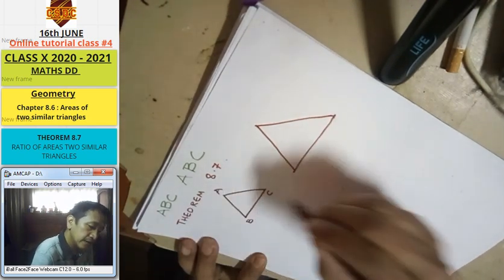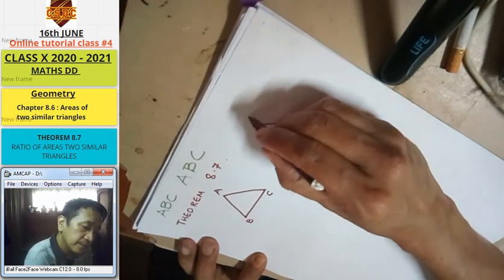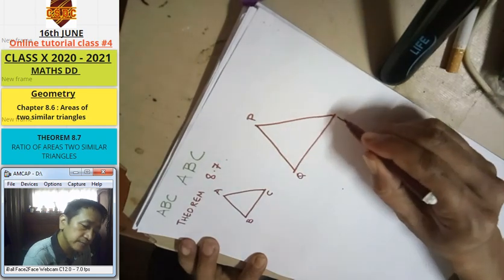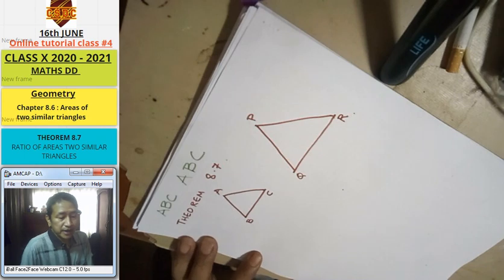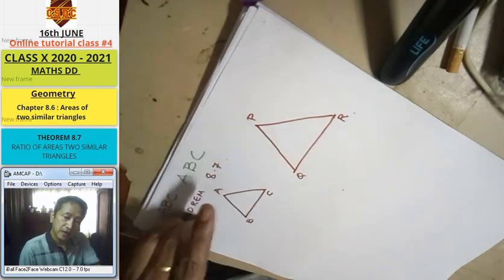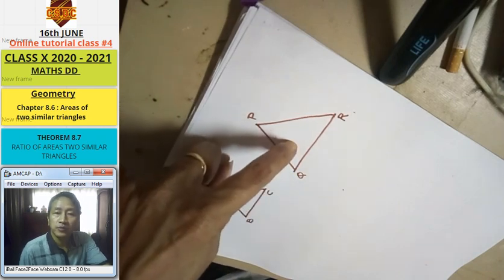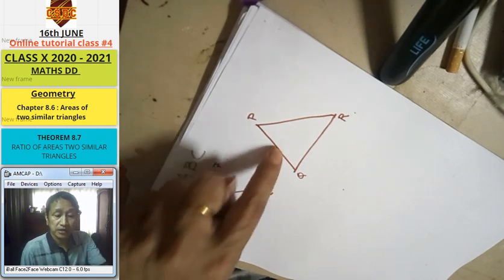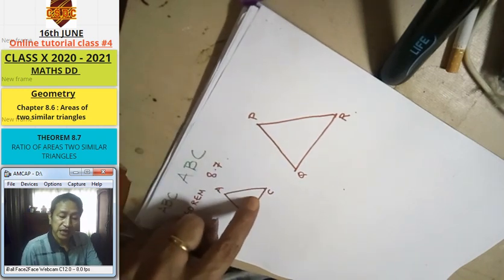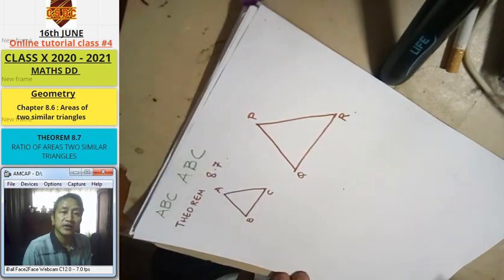The triangle is A, B, C and triangle B, Q, R. The area by the area will be equal to the side squared by the side squared.